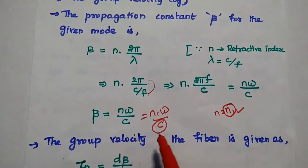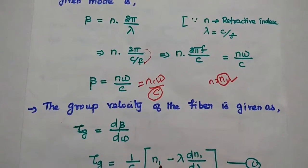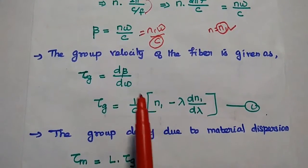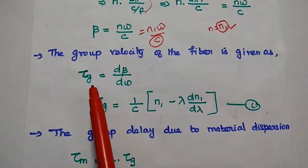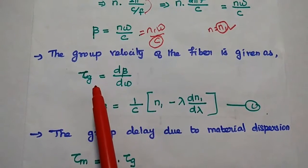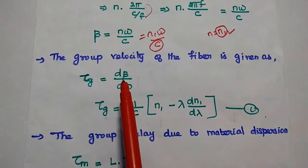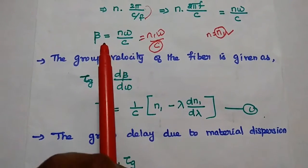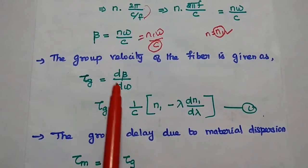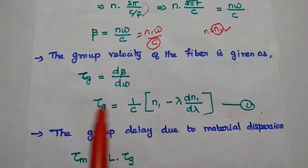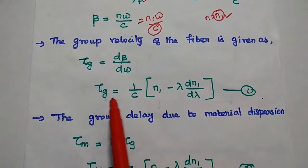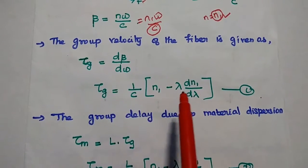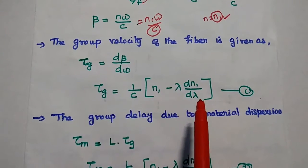Next, the group velocity of the fiber can be obtained using the formula: τg (group velocity) equals the differentiation of the propagation constant with respect to omega. Differentiating beta with respect to ω, we get the group velocity equal to (1/c) times (n1 minus λ·dn1/dλ). Consider this as the first equation.